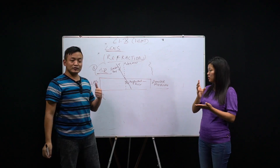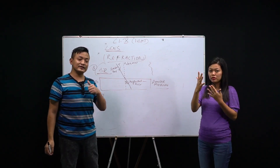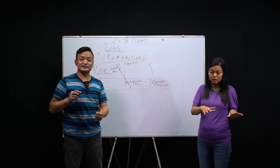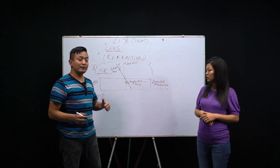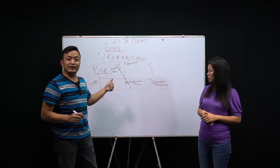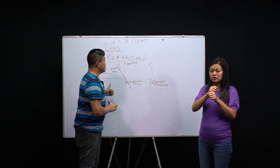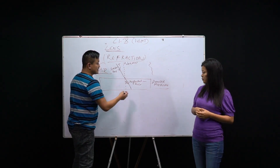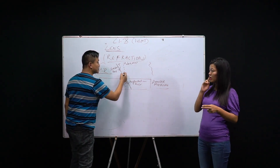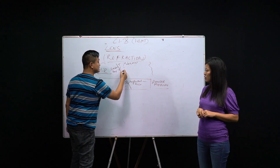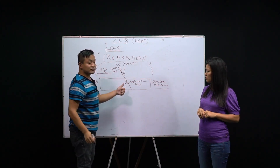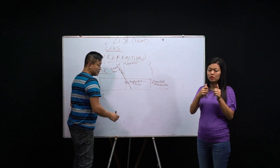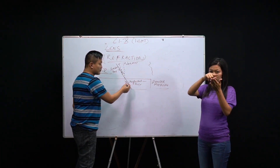In the laws of reflection, angle i equals angle r, but that is not the case in refraction. Here angle i and angle r are not equal. When going from rarer to denser medium, angle i is greater than angle r (ray bends toward normal). When the ray goes from the denser medium back to air, the refracted ray bends away from the normal — angle of refraction is greater than angle of incidence.